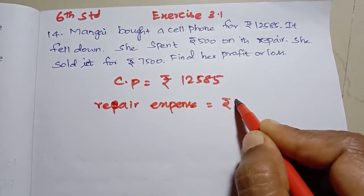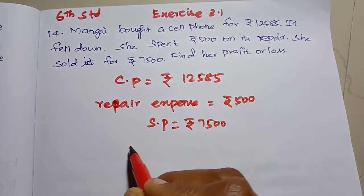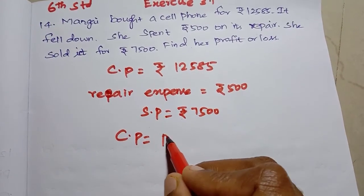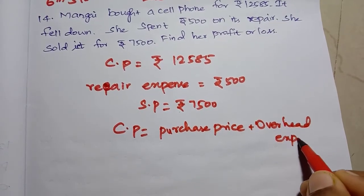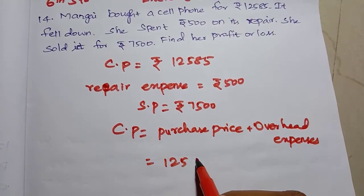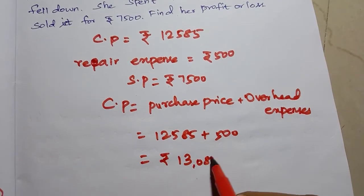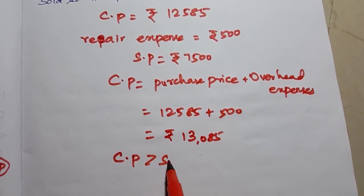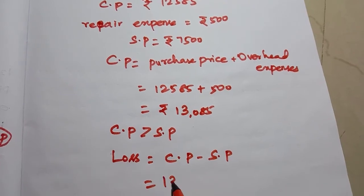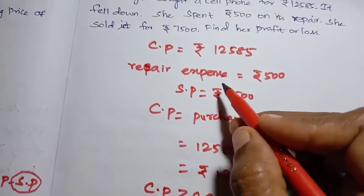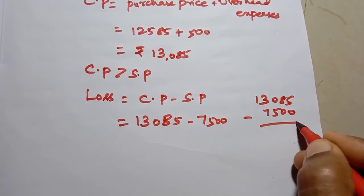Expense equals rupees 500. Selling price equals rupees 11,500. Cost price equals purchase price plus overhead expenses, which is 12,585 plus 500, equals rupees 13,085. Since cost price 13,085 is greater than selling price 11,500, there is a loss. Loss equals cost price minus selling price: 13,085 minus 11,500.